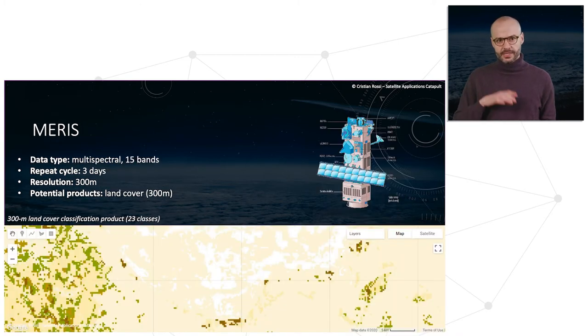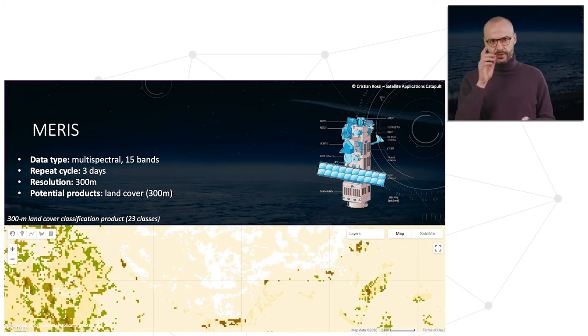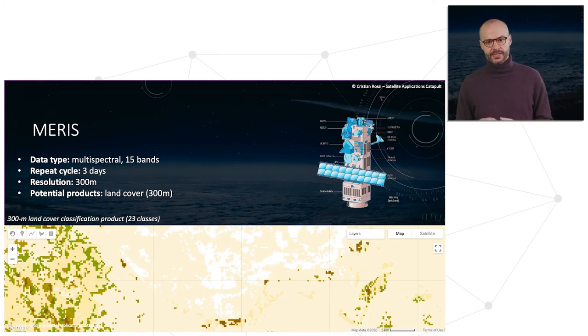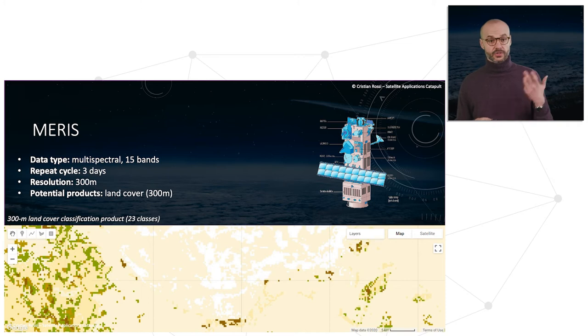Another land cover product has been derived with MERIS — multispectral data with 15 bands, a 3-day repeat cycle, and a resolution of 300 meters. This land cover product is actually called GLOBCOVER.